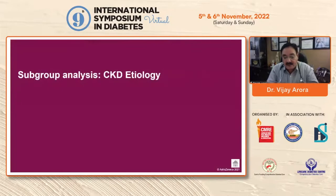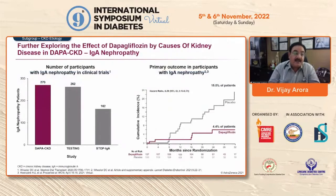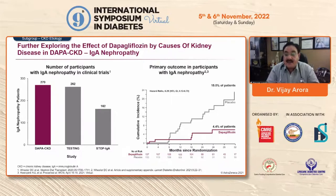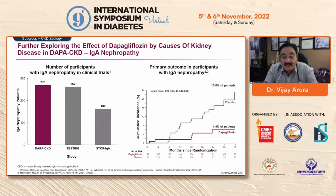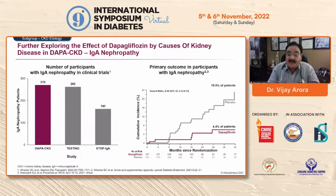Further exploring dapagliflozin's effect by cause of kidney disease in DAPA-CKD for IgA nephropathy: the DAPA-CKD sub-study, the TESTING trial, and the STOP-IgA trial. The highest number of patients was in DAPA-CKD at around 270, then TESTING at 262, and STOP-IgA at 162. For the primary outcome in IgA nephropathy participants, 15% on placebo versus 4.4% on dapagliflozin experienced disease progression. The curve separation begins very early at week 2. After week 8, incidence is higher in the placebo group, and results favor dapagliflozin through the 32-week trial, with a rate ratio of 0.29 — a remarkable improvement in IgA nephropathy.